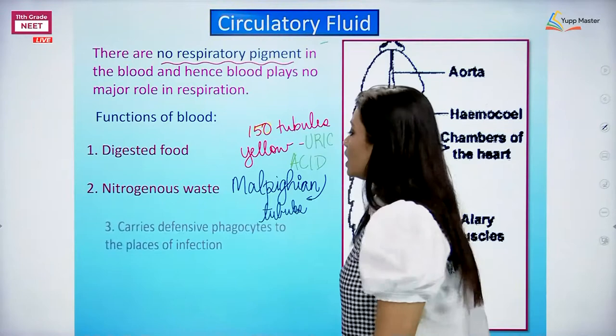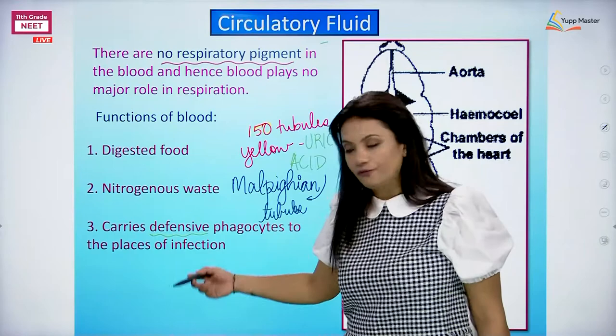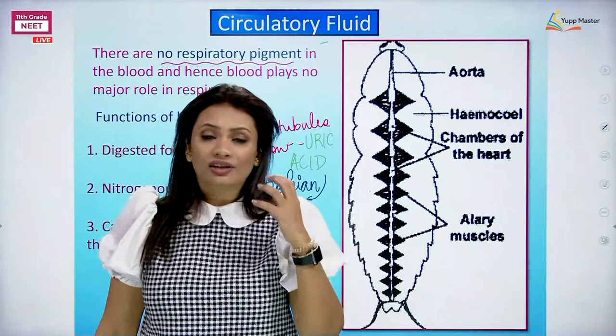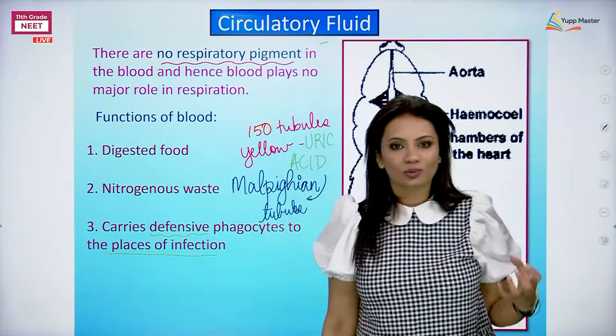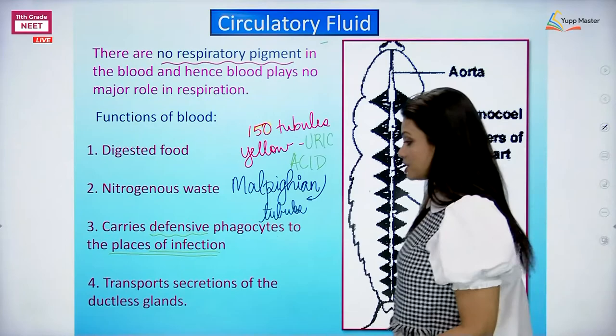Third function: blood carries the defensive hemocytes. It carries those defensive phagocytes to the places of infection. If there is any foreign substance, any bacteria, virus, or any infection in the body, then any inflammation in the body of the cockroach - just like our WBCs work - similarly the hemocytes will go and fight that infection.